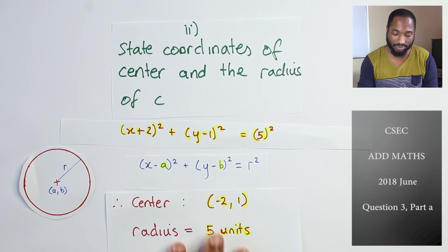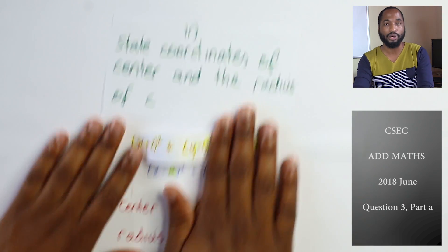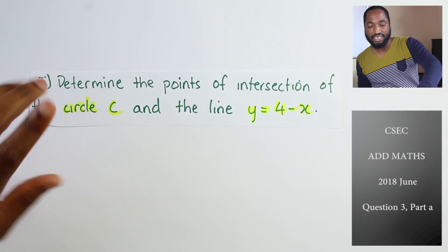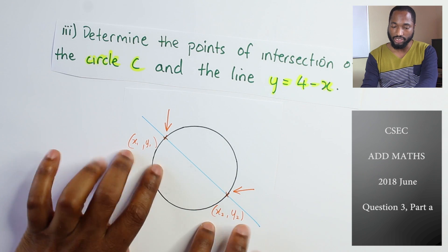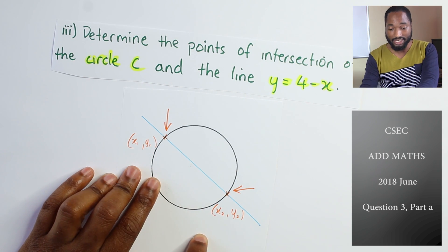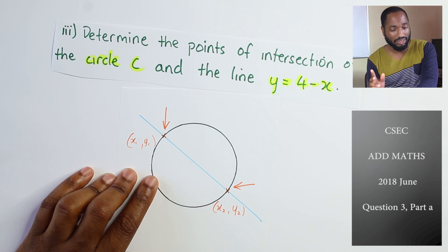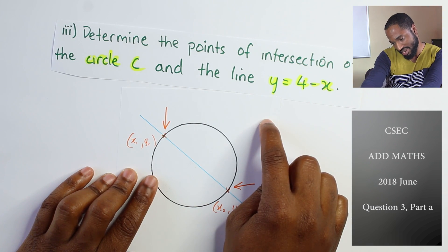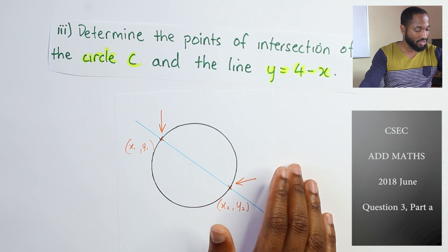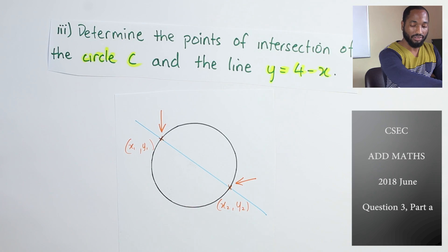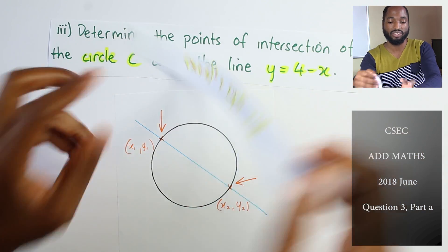Part three: determine the points of intersection of circle C and the line y equals 4 minus x. The line will cut the circle at two points — or it could be tangent and give one point, but two intersections is most likely here. We have the equation of the circle from before. All we need to do is substitute y equals 4 minus x into the circle equation and solve.